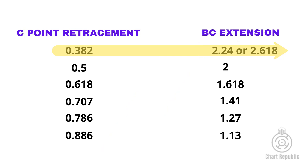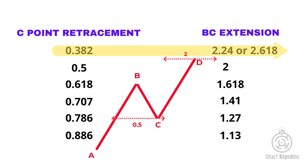If the C point retraces the AB leg by 50%, the D point makes a milder correction and we must look for it to hit the 2BC extension. The other ratios work based on the same logic.